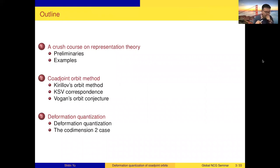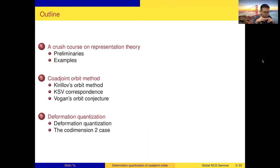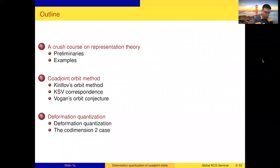Here's the outline of my talk. In the first part, I will give some basic introduction to representation theory of reductive Lie groups, in case you are not familiar with it. In the second part, I will talk about the geometric way to construct representations, which is the so-called coadjoint orbit method philosophy. The third part is about our work on orbit method using deformation quantization.